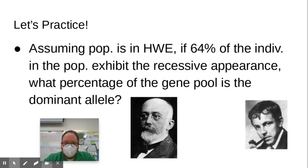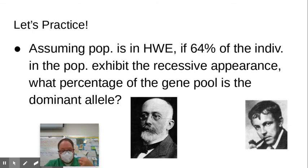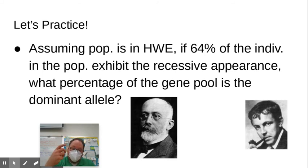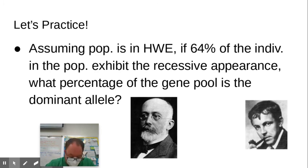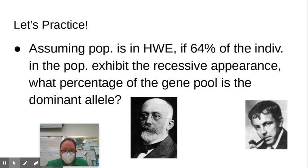Here's a practice problem: assuming a population is in Hardy-Weinberg equilibrium, if 64% of individuals exhibit the recessive appearance, what percentage of the gene pool is the dominant allele? To look recessive — to have the recessive phenotype — you have to be homozygous recessive. So what they give you is q squared. If q squared is 0.64, find the square root: q is 0.8. Then p plus q equals 1, so if q is 0.8, p is 0.2. The question asks for the percentage of the gene pool with the dominant allele — that's just p — so the answer is 0.2 or 20%.